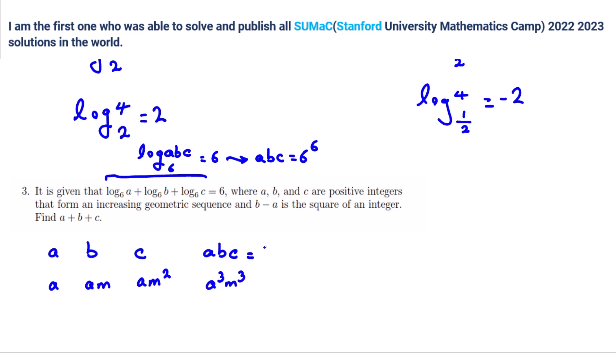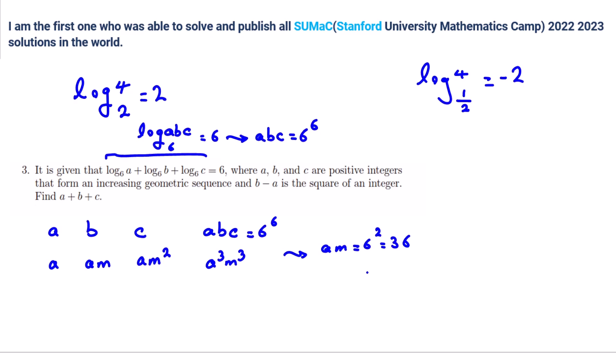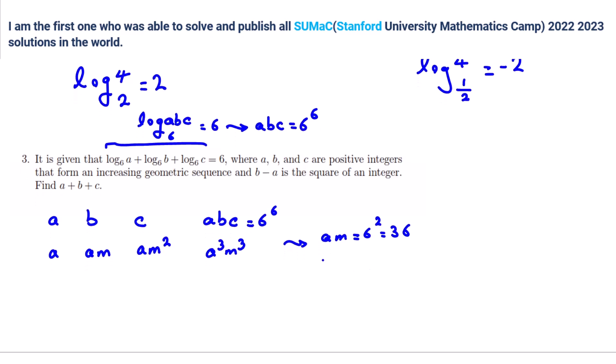And is equal to 6 cubed, right? Yeah. So we can conclude A M is what? 6 to the 2. Which is 36, right? Yeah.